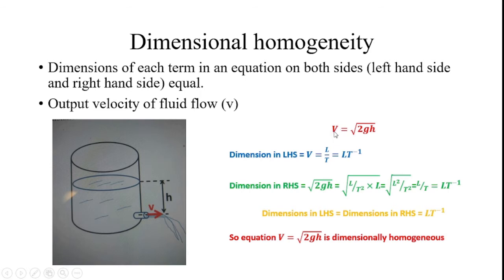Velocity can be expressed as distance traveled divided by time. Distance traveled is represented with L, and time is expressed with capital T. So velocity has the dimension L into T power minus 1.